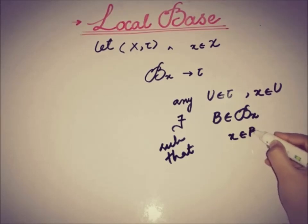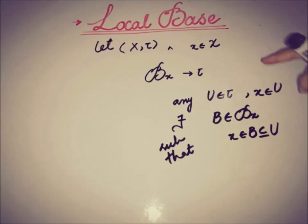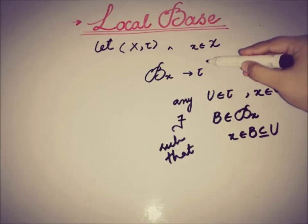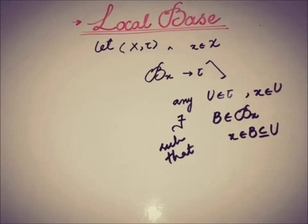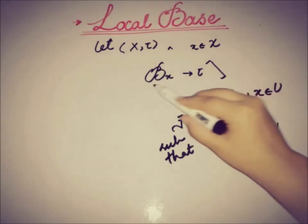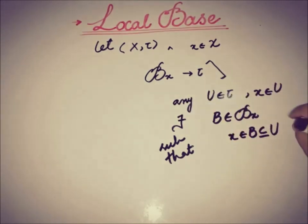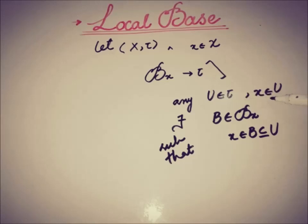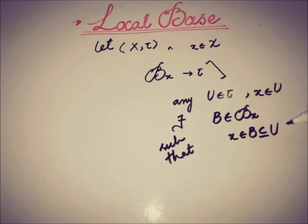...x belongs to B and B is a subset of U. So given the topological space, x is a point taken from the set X, and there is a sub-collection Bx of the topology. For any open set U that contains the point x, there exists an element B from the collection such that x is a member of B and B is a subset of U. This is the condition to form a local base, or neighborhood base, or base at a point x.